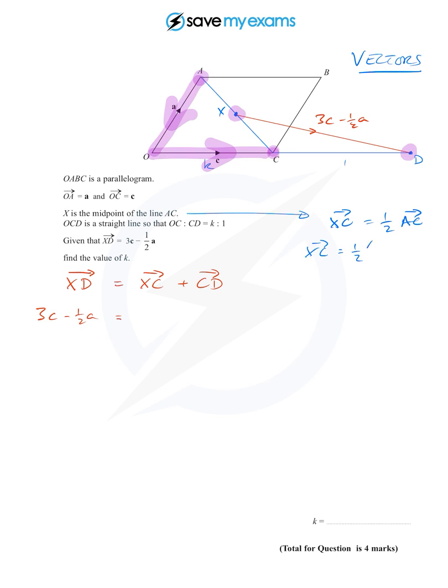And we know those vectors, so that's a half of—well, AO is backwards along a, and when I go backwards along a vector that's minus that vector—and OC is just c. So I have that.